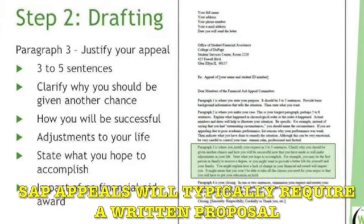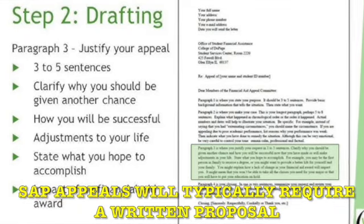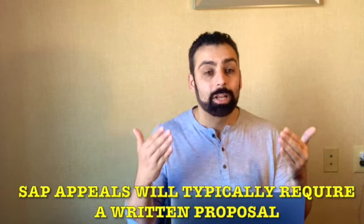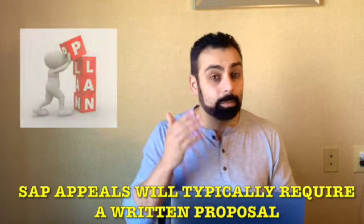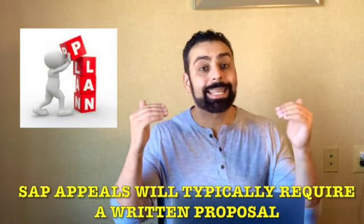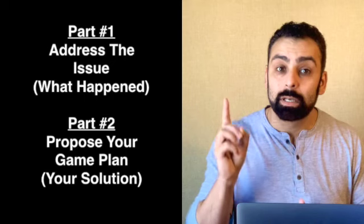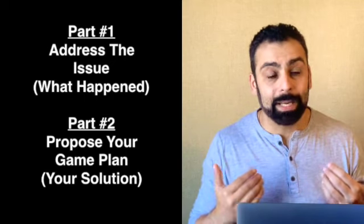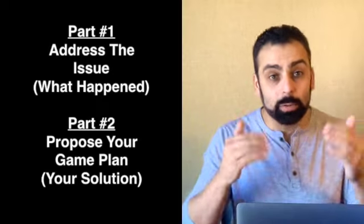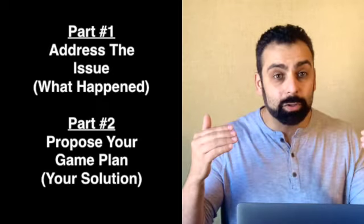Also within that proposal, they're going to want to know your game plan for getting yourself above that 2.0 and keeping yourself above a 2.0. So within the appeal, the university wants basically two things: number one, let us know what happened and why you fell below the 2.0; and number two, what are you going to do as a student to get above the 2.0 and stay above it.